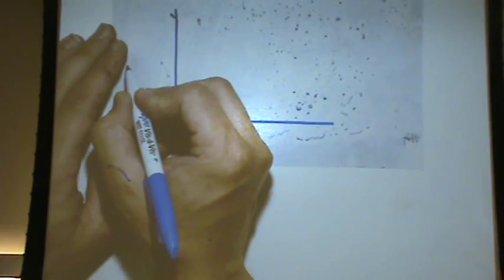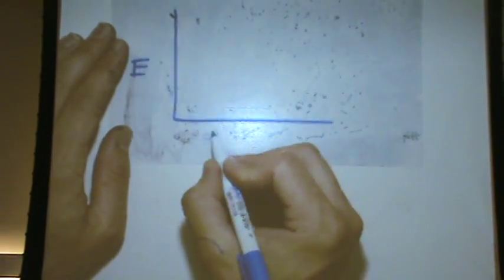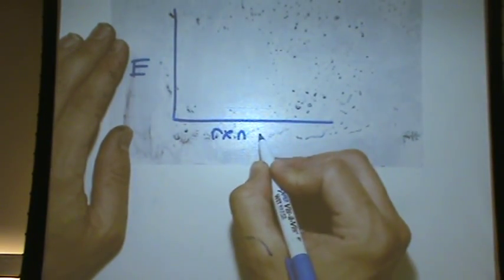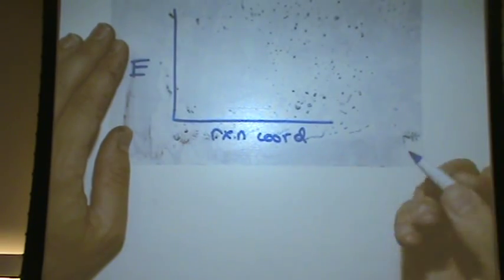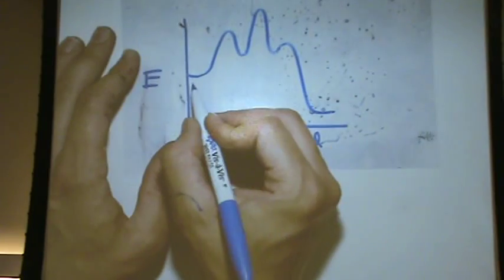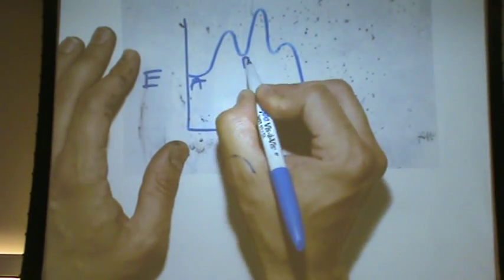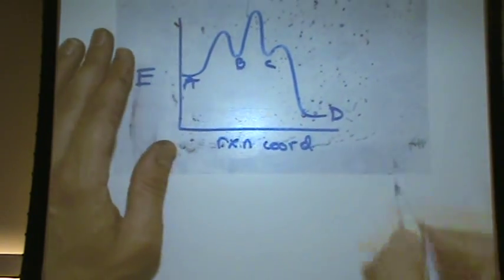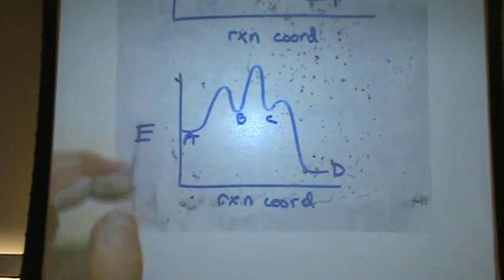You can also have intermediates. So, make your graph again, and you can have as many intermediates as you want. Like this. Let's say this is A, B, C, D. How many intermediates? Two. B and C.